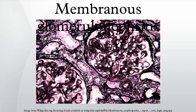Morphology: the defining feature of membranous glomerulonephritis is the presence of subepithelial immunoglobulin-containing deposits along the glomerular basement membrane. By light microscopy, the basement membrane is observed to be diffusely thickened. Using Jones stain, the GBM appears to have a spiked or holey appearance. On electron microscopy, subepithelial deposits nestled against the glomerular basement membrane appear to be the cause of the thickening.